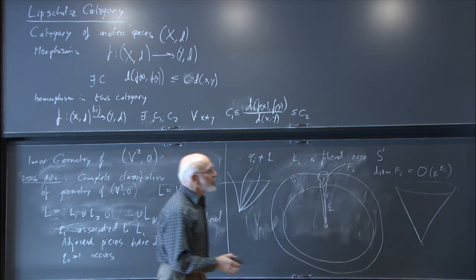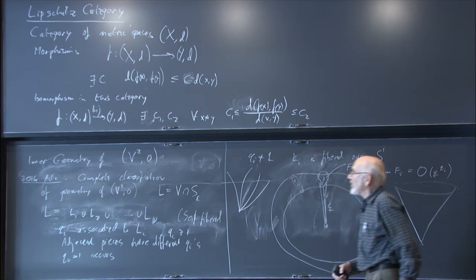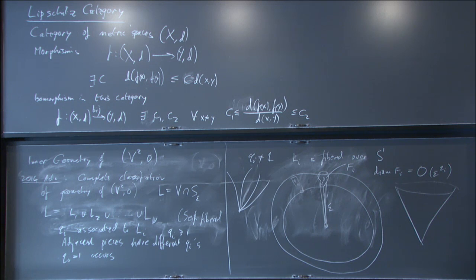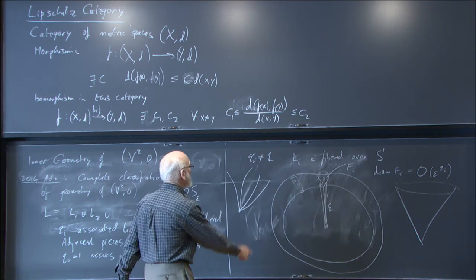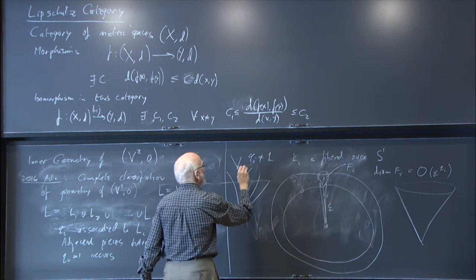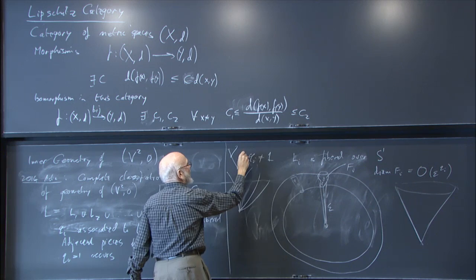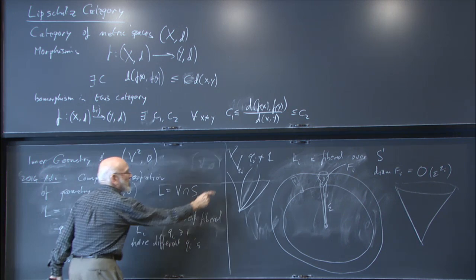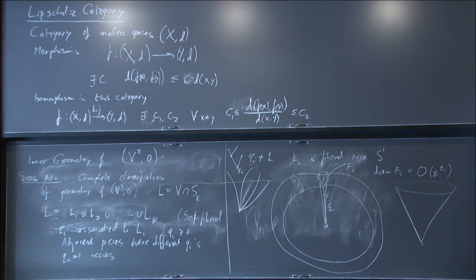Ann Pichon and I thought doing the outer classification would be easy and kept putting it off. We're now completing a paper to do the same for the outer geometry. The difference for the outer geometry is that instead of a single Q_i for each piece, we have a tree of Q_i's — a tree with our Q_i at the bottom and then larger numbers at certain points along the tree. Those are the extra pieces of data needed for the outer classification. We're still finishing writing that up.